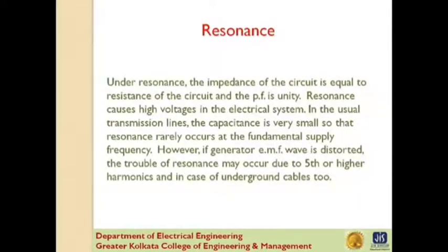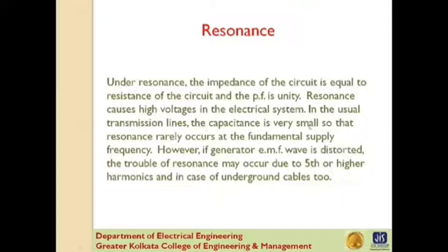Next is resonance. Resonance in an electrical circuit occurs when the inductive reactance of the circuit becomes equal to the capacitive reactance. Under resonance, the impedance of the circuit equals the resistance and the power factor is unity. Resonance causes high voltages in electrical systems. In usual transmission lines, the capacitance is very small so that resonance rarely occurs at the fundamental supply frequency. However, if the generator EMF is distorted, the trouble of resonance may occur due to fifth or higher harmonics, and in the case of underground cables too.